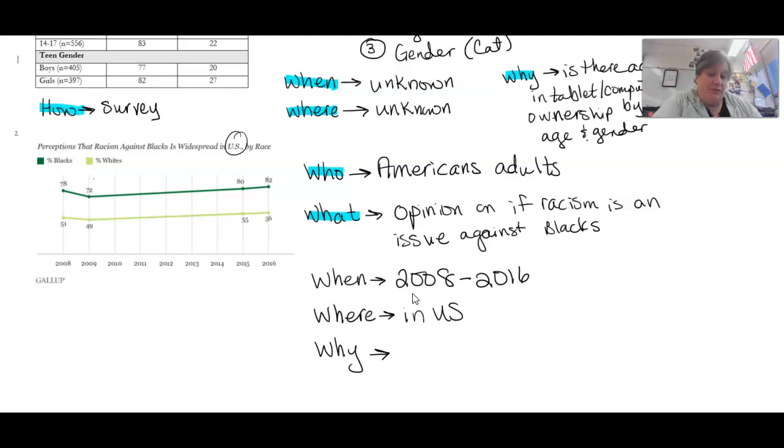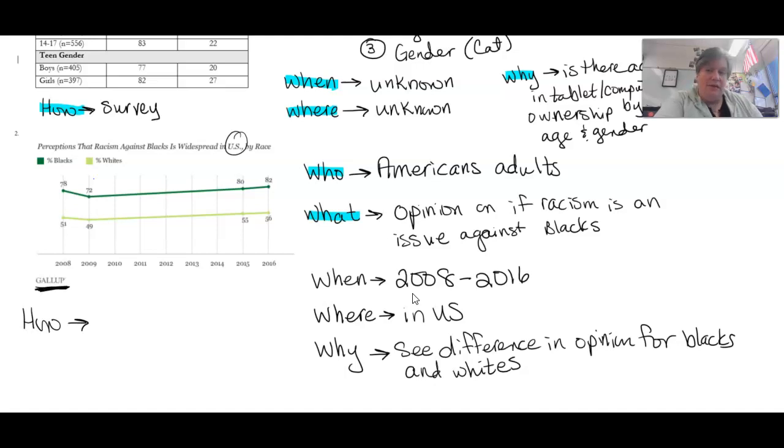So, that people can see the difference in people's opinion. See difference. In opinion. For blacks and whites. And if you notice, this is a big difference. It's like a 20 or 30 spread point the whole way. So, even if you may not agree that there's a difference, people believe. And you can't really change what people believe. So, people actually believe that there is a difference. And then the how. The how is, this is Gallup. Gallup is one of the big survey companies in the United States. So, this is a survey.